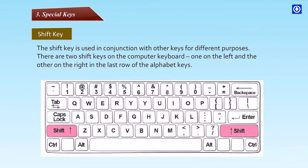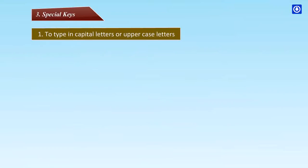Shift key: The shift key is used in conjunction with other keys for different purposes. There are two shift keys on the computer keyboard, one on the left and the other on the right in the last row of the alphabet keys, to type in capital letters or uppercase letters.